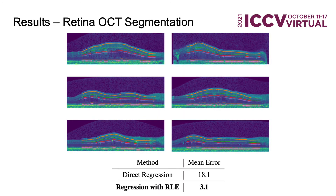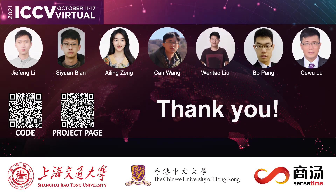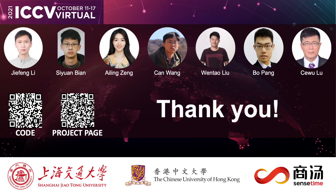RLE is a general method and can be applied to different regression tasks. In addition to human pose estimation, RLE can be used to regress SMPL parameters, implicit functions, and even general regression problems like retina segmentation. Our code and models are available. Welcome to our poster for more technical details. Thank you for listening.